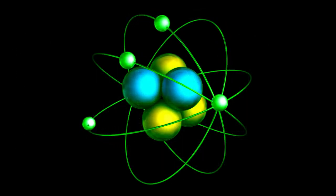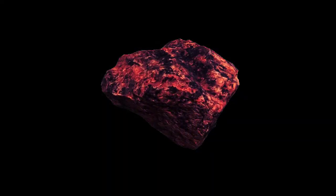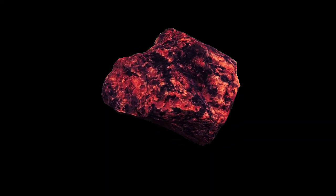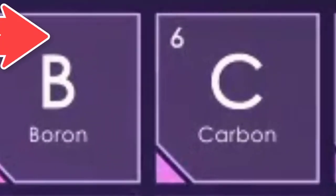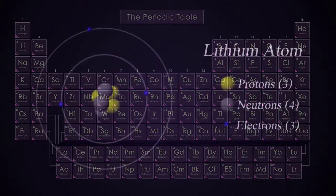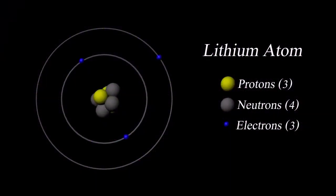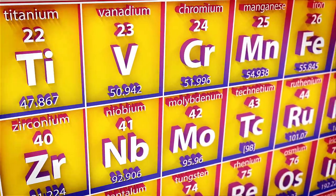No other element has exactly six protons in its atoms. Moreover, all atoms of carbon, whether found in your liver or a lump of coal, contain six protons. Thus, the atomic number, which is the number of protons in the nucleus of the atom, identifies the element. Because an atom usually has the same number of electrons as protons, the atomic number identifies the usual number of electrons as well.